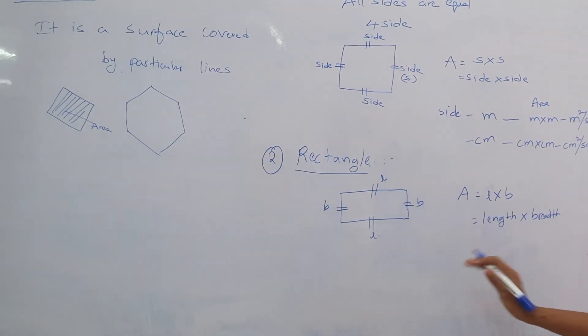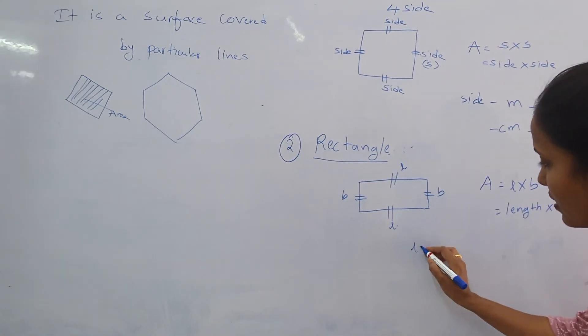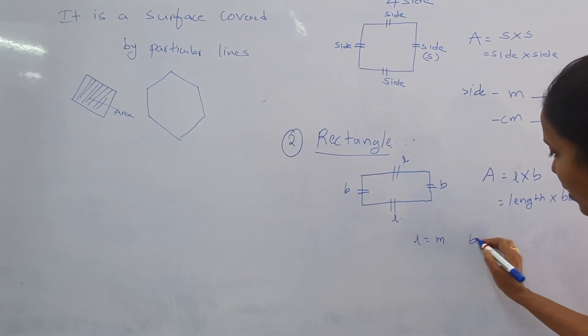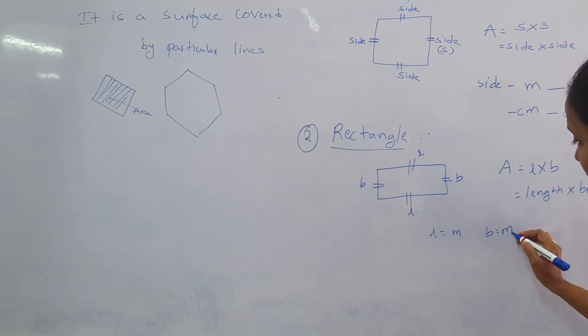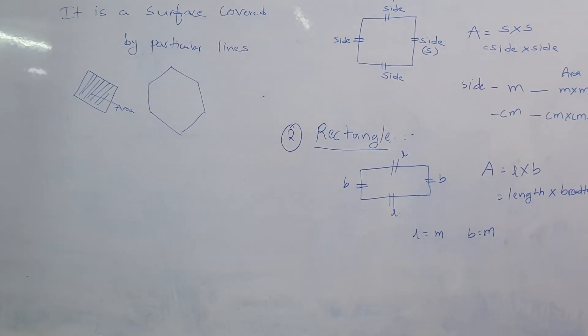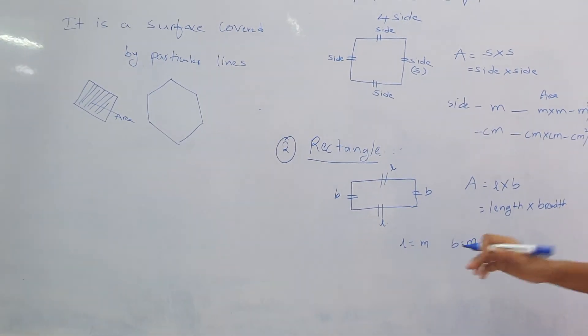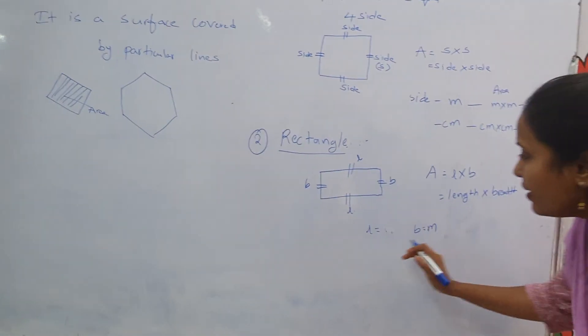The units should match. Suppose the length is in meters, then the breadth must be converted to meters. When calculating the area, the length and breadth must have equal units. Let me take one example.